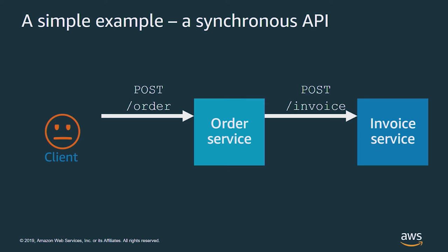This is a standard synchronous API — I'm sure we've all written plenty of these. In this case, a client makes a request to an order service, which then turns around to a downstream service called an invoice service. That does some work and returns a 201 to show it's been successful, then returns that back to the client.